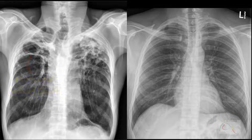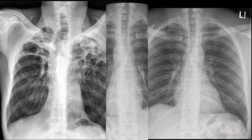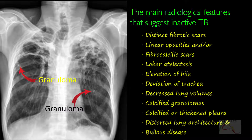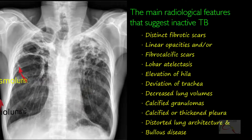There are no definite consolidations to indicate active disease. The main radiological features that can suggest inactive TB on a chest x-ray are distinct fibrotic scars, linear opacities, and/or fibrocalcific scars, most commonly in upper zones with lobar atelectasis, elevation of hilar nodes, deviation of trachea, decreased lung volumes, calcified granulomas, calcified or thickened pleura, distorted lung architecture, and bullous disease.